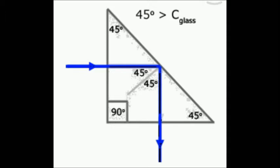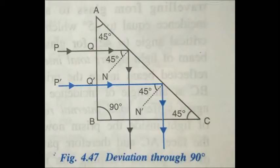This total reflecting prism has three uses. It is used to deviate a ray of light through 90 degrees, it is used to deviate a ray of light through 180 degrees, and it is used to get an erect image of an inverted object. Let us see how a total reflecting prism is used to deviate a ray of light through 90 degrees.